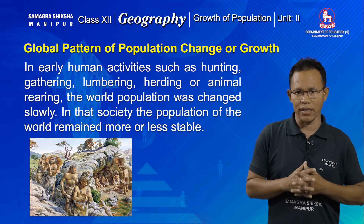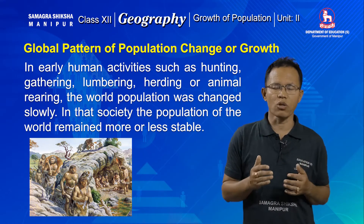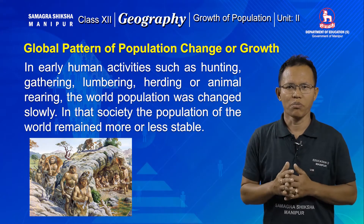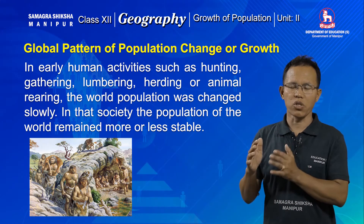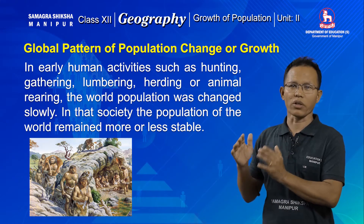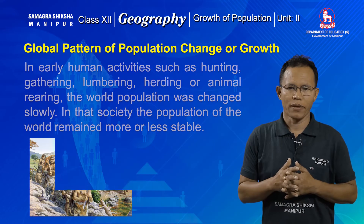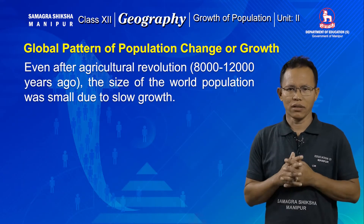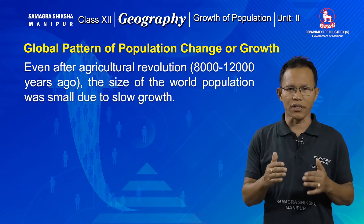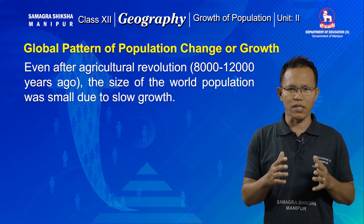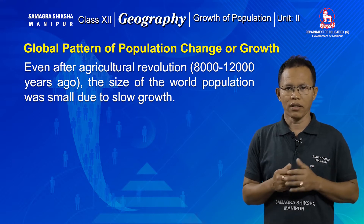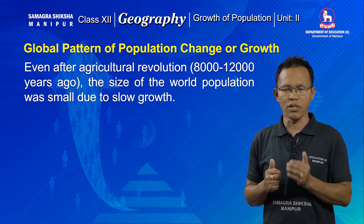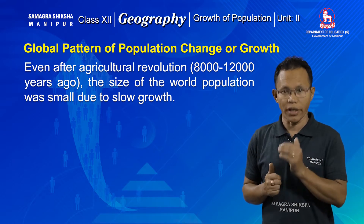In that society the population of the world was very small because of the slow growth rate. Even after the agriculture revolution took place between 8,000 to 12,000 years ago, the world population was growing slowly.